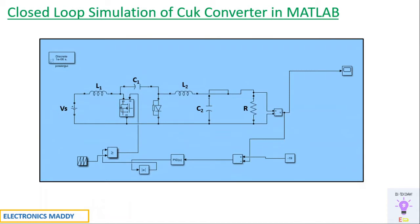This is the circuit diagram of Cuk Converter in closed loop operation in MATLAB. Just to give you an overview of how the circuit looks like, I have it with respect to MATLAB's file. The design procedure and simulation of Cuk Converter in open loop is already discussed in one of our previous videos — it will be available in the end screen as well as in the description. In case you want to watch how to design them with respect to L1, C1, L2, C2, and R values, please do watch that video. It will give you a great idea of how to design the circuit as well.